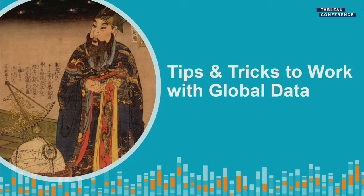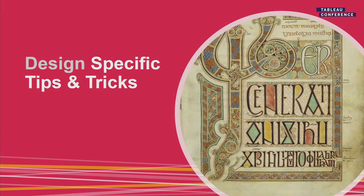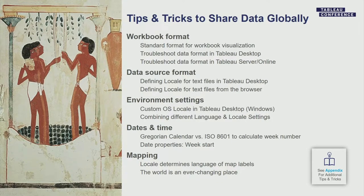I really like those acronyms — WOOB, WOOB, and WUBBA. Keep those in mind because we're going to go back to them. Now we're going to go into the meaty stuff: tips and tricks to work with data globally and troubleshoot any data format issues. We're going to focus on design-specific tips and tricks versus some role-specific tips and tricks, which we've included in the appendix. The main sections we're going to cover are: workbook and data source format, environment settings, and then Carla is going to talk about dates, time, and mapping.